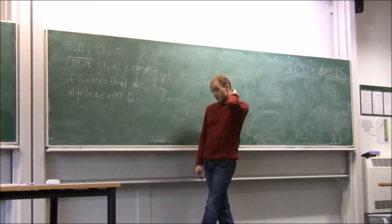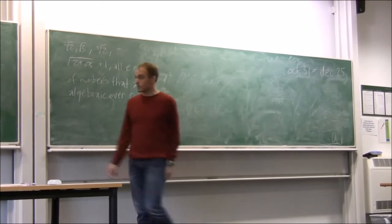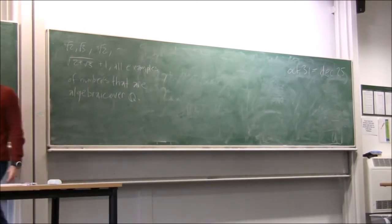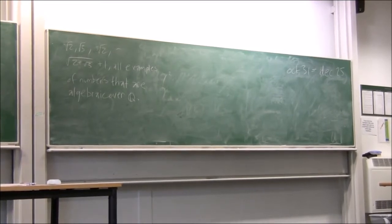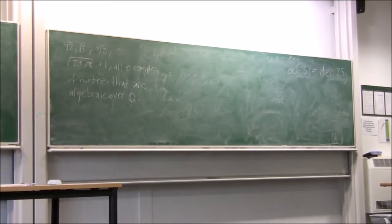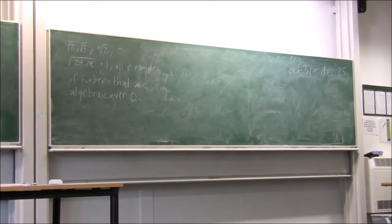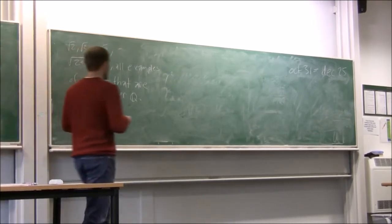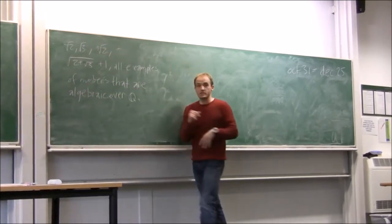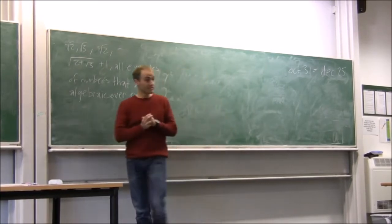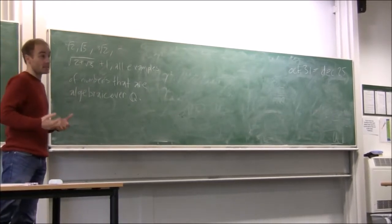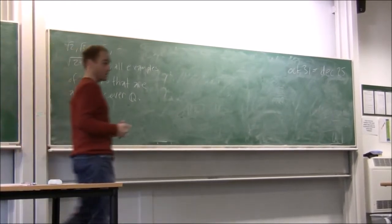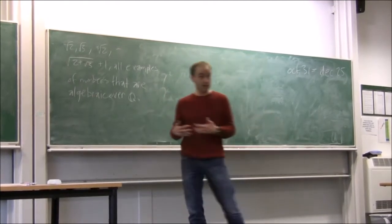Let me also make a comment: if my base field is Q, the collection Q is a countable set. The collection of all polynomials with coefficients in Q is also countable — you can enumerate it. And so the collection of all algebraic numbers over Q is also a countable set. But the collection of all real numbers is an uncountable set, so there are actually a lot more real numbers that are not algebraic over Q.